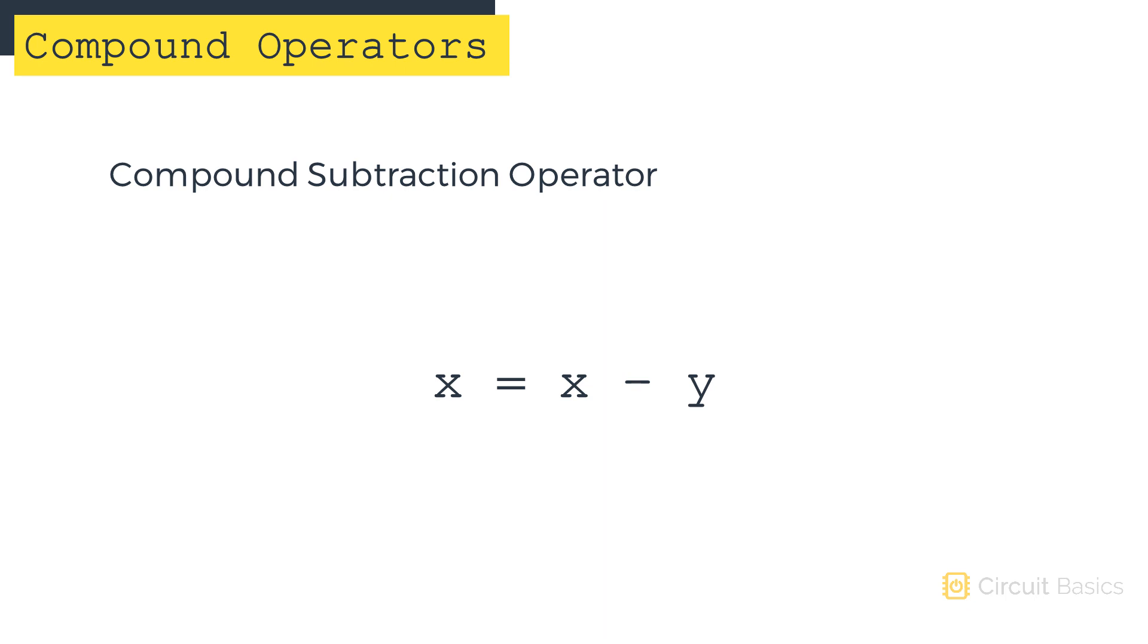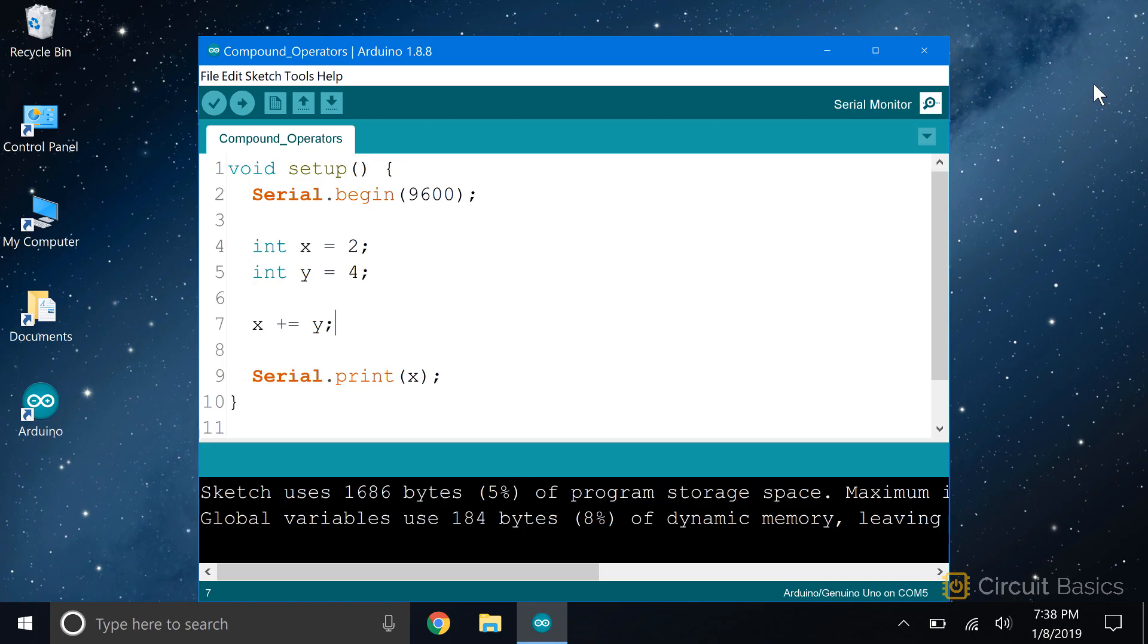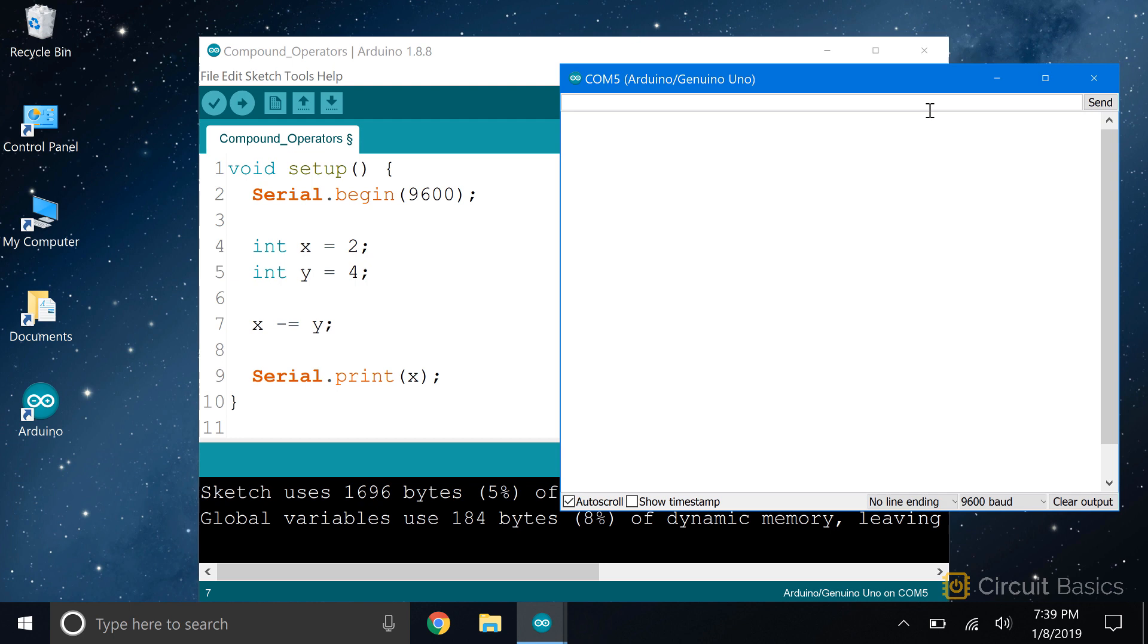There's also a compound subtraction operator, which does the same thing as writing x equals x minus y. Compound subtraction works just like compound addition, but it takes a variable and subtracts another variable from it. The result is stored in the first variable. Compound subtraction is written as a minus and equal sign. So with x equal to 2 and y equal to 4, x minus equals y should be 2 minus 4, or negative 2. And yep, that's what we get.